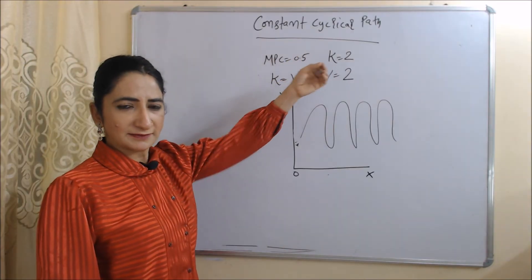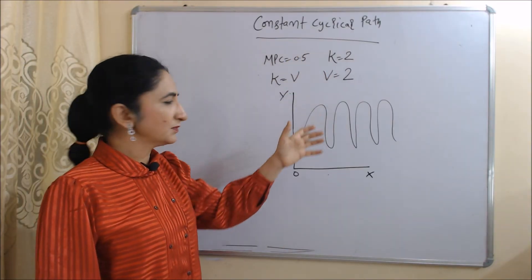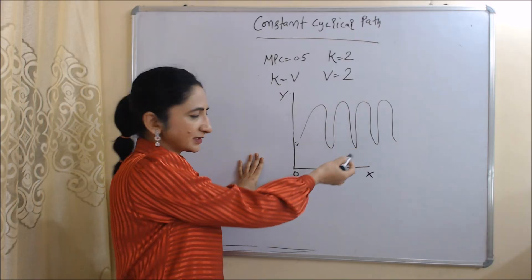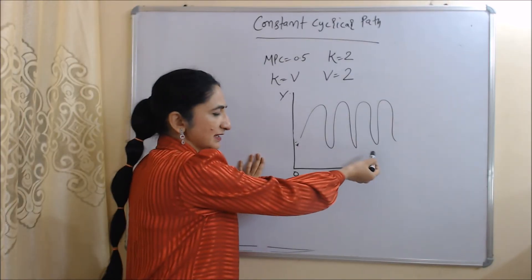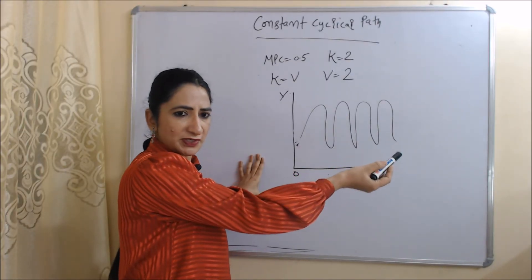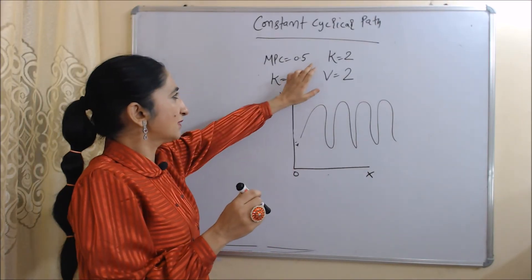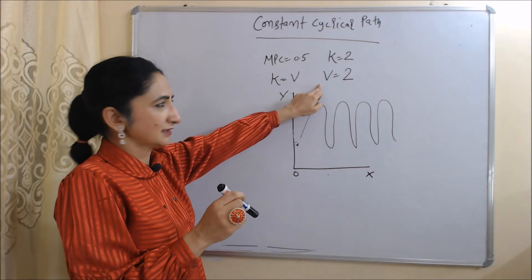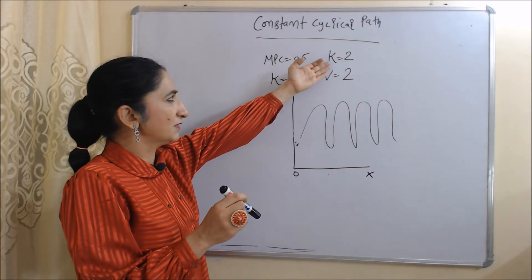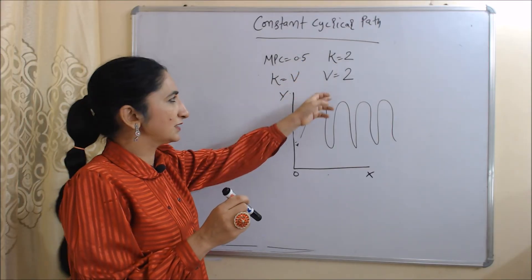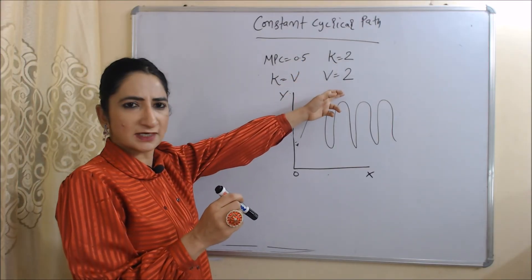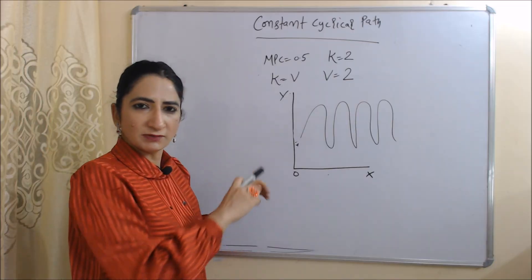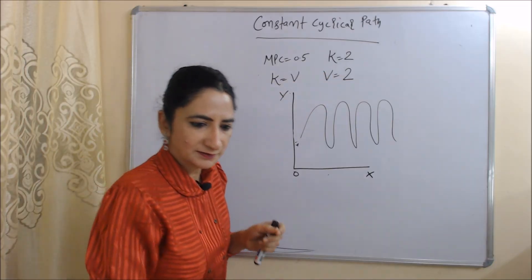In the constant cyclical path, the economy produces constant cycles — the cycles remain the same size. This happens because the multiplier is equal to the accelerator. Here the value of the multiplier is 2 and the value of the accelerator is also 2. That is why the economy produces constant cycles.